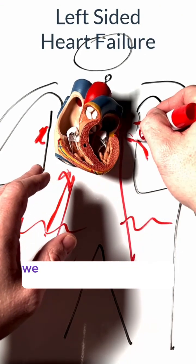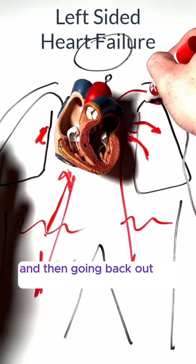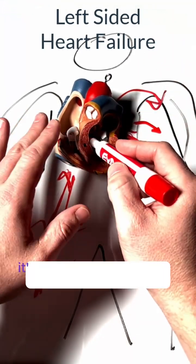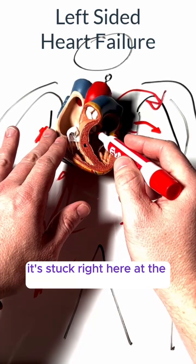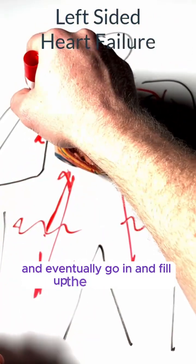If we have left-sided heart failure, we have blood coming back that should be going into the left side of the heart and then back out into the body, but it can't do that. It's stuck right here at the aortic valve, so that means it's going to fill up this left ventricle and eventually fill up the lung.